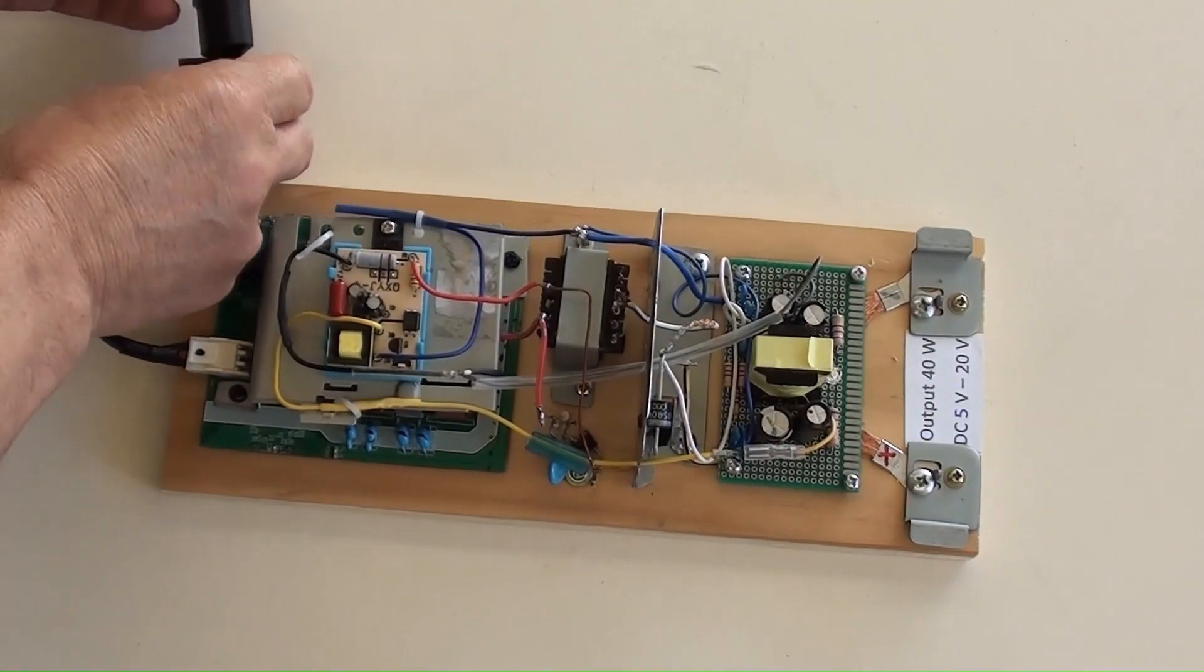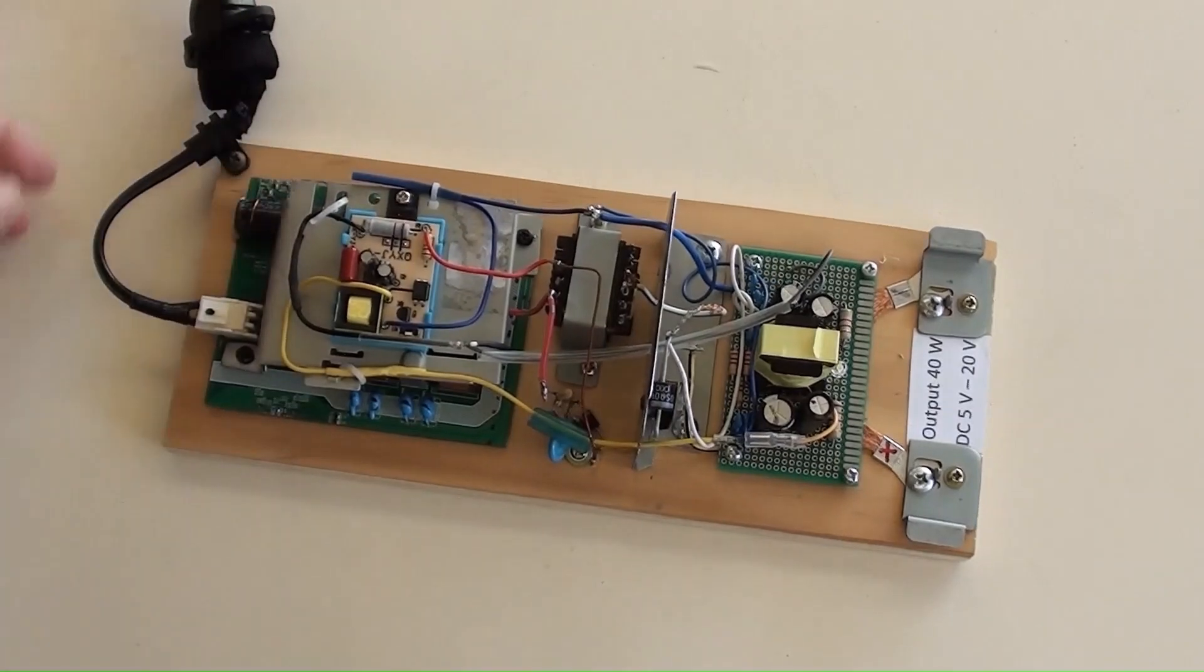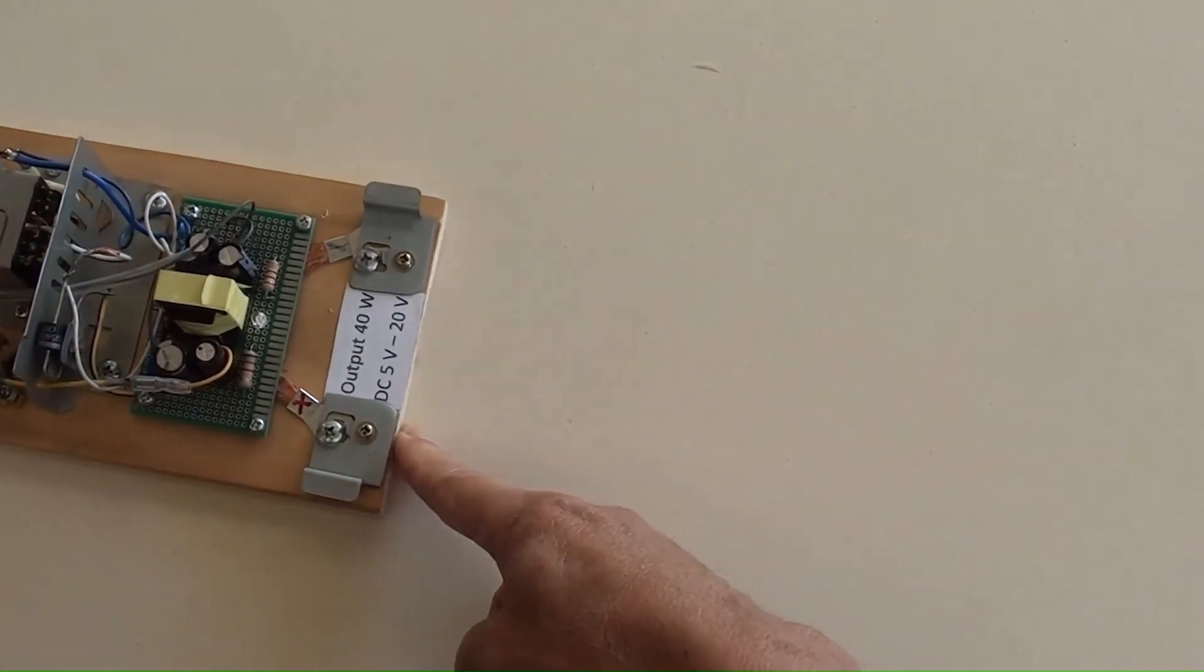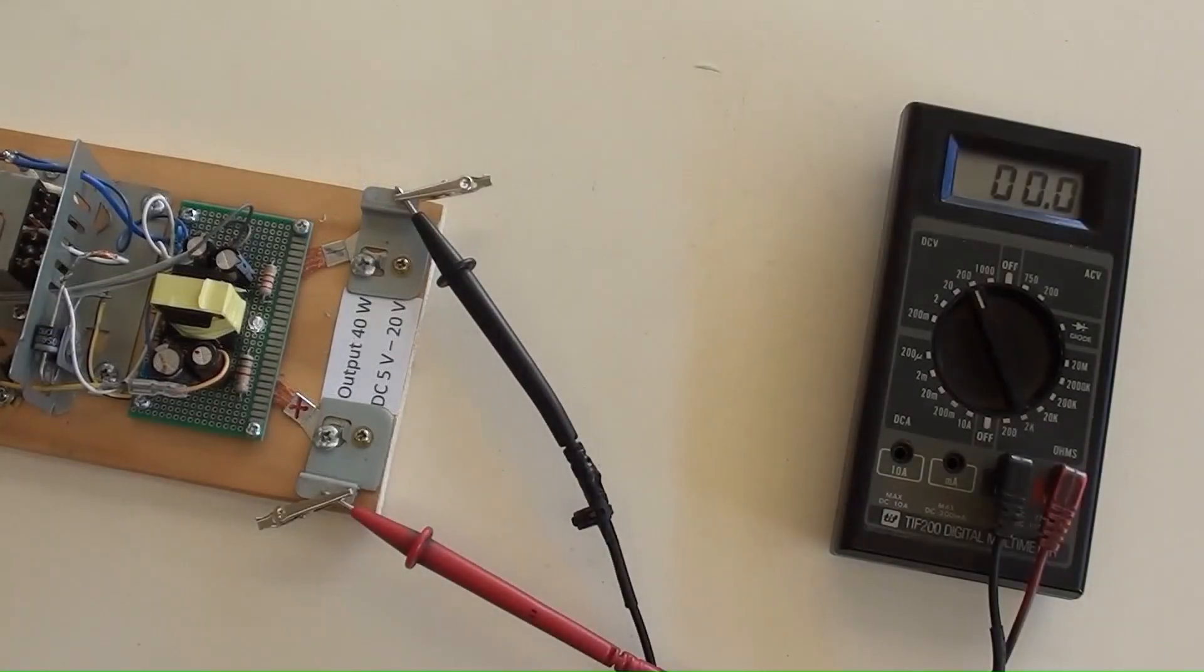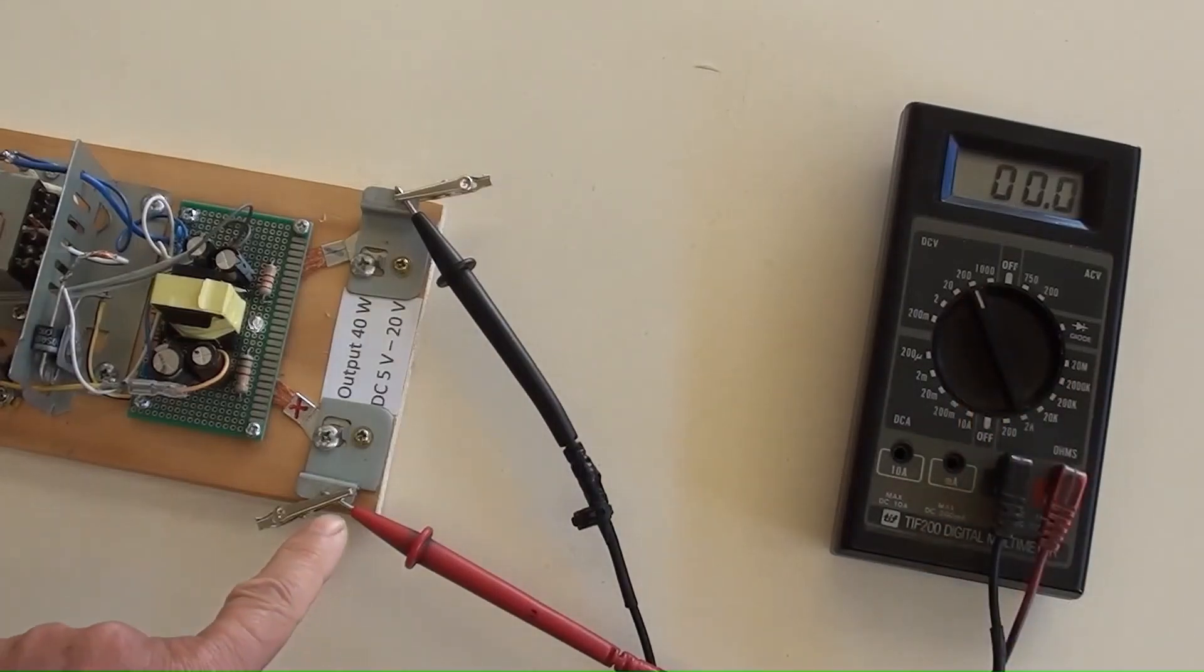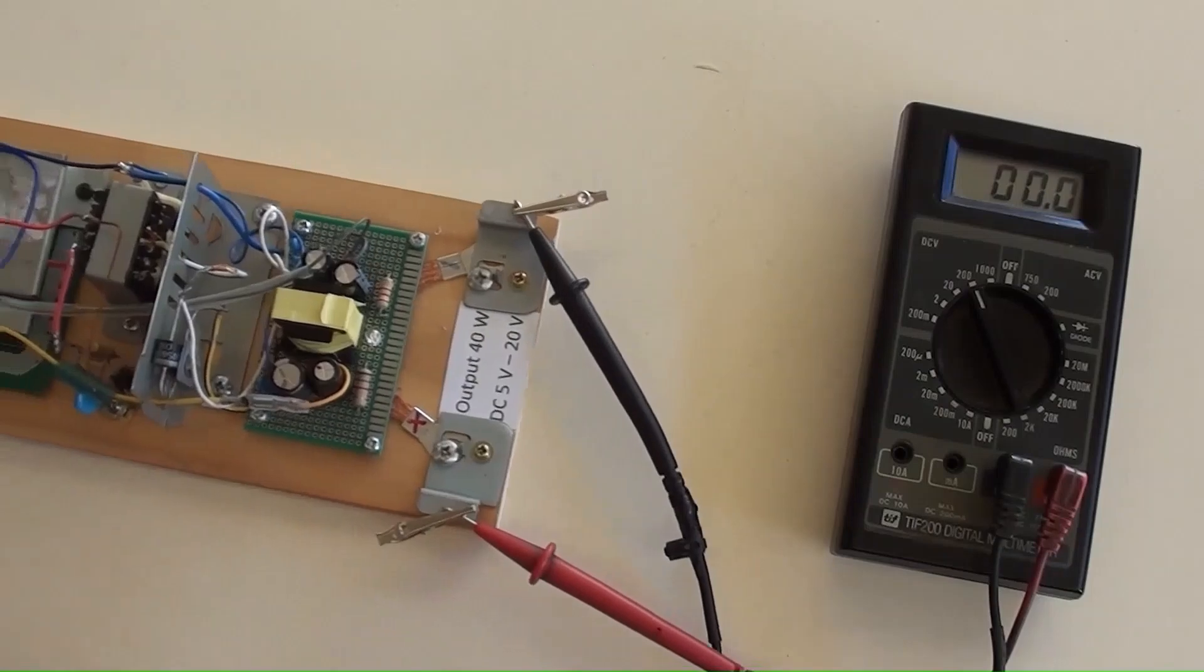Plugging the AC power cable into its socket, but not to switch AC power on yet. A multimeter has been selected to DC 200 volt position, and its probes have been connected to the output positive and negative accordingly.